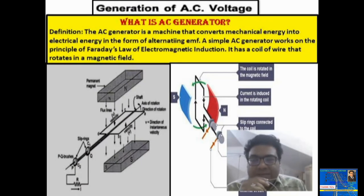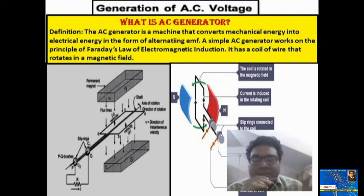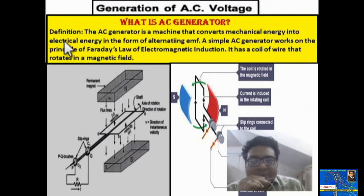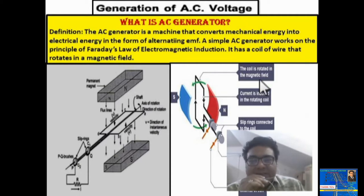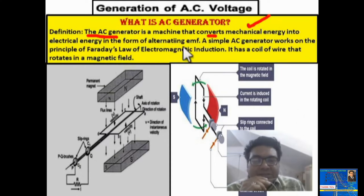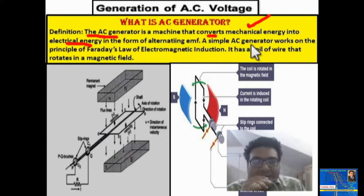On your screen you can see the construction diagram of the AC generator. Basically, what is an AC generator? The AC generator is a machine that converts mechanical energy into electrical energy in the form of alternating EMF.